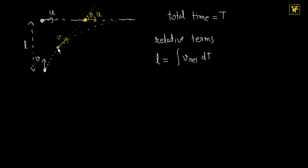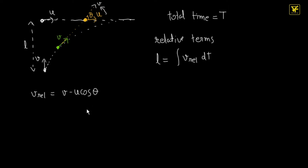What is the relative velocity at any instant? Say at this instant it is making an angle theta. The relative velocity is the net velocity difference in the direction joining the two points. V is already in the direction joining the two points, so you have to take a component of U in this direction. So the relative velocity is equal to V minus U·cosθ. So my L is equal to the integral of (V minus U·cosθ) dT.